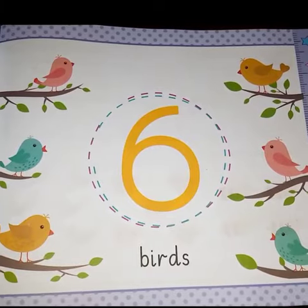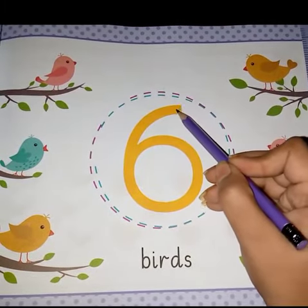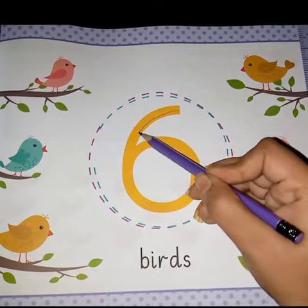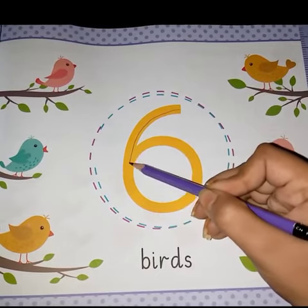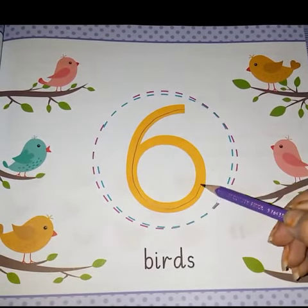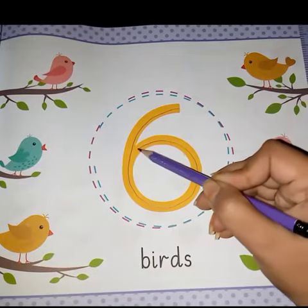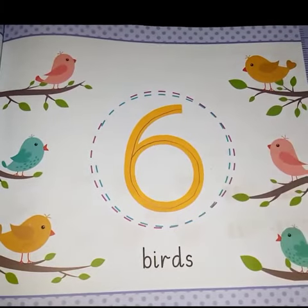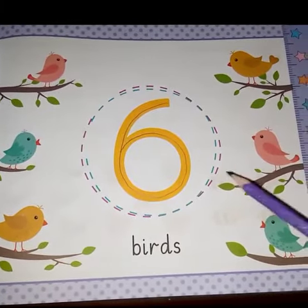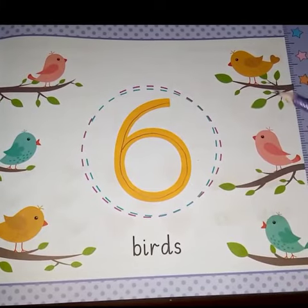Now I will show you how to write six. Start from here, make a slant line like this, and then a circle. Which number is this? It's number six. Konsa number hai ye class? Number six.